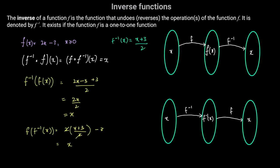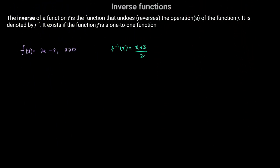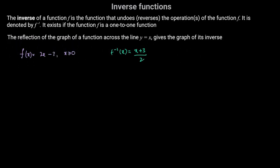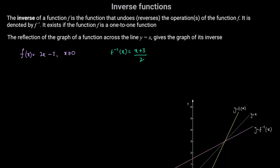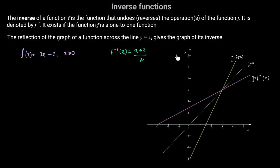How do we represent a function and its inverse graphically? The reflection of the graph of a function across the line y equals x gives the graph of its inverse. We can see the graph of y equals f of x, which is the line y equals 2x minus 3. Reflecting this line across y equals x gives the graph of y equals f inverse of x, which is y equals (x plus 3) divided by 2.